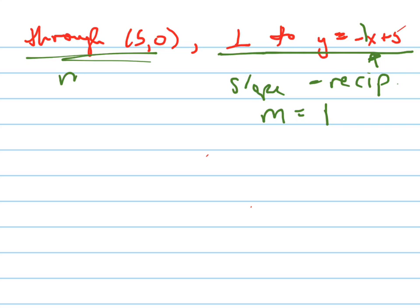So now if I told you that the slope was equal to 1 and it goes through the point 5,0, what's the easiest way to write the equation of that line? It's called point-slope form.